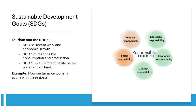SDG 12 — Responsible Consumption and Production: Sustainable tourism promotes eco-friendly practices, such as reducing waste, sourcing local materials, and adopting energy-efficient technologies. It encourages travelers and businesses to minimize their environmental footprint.